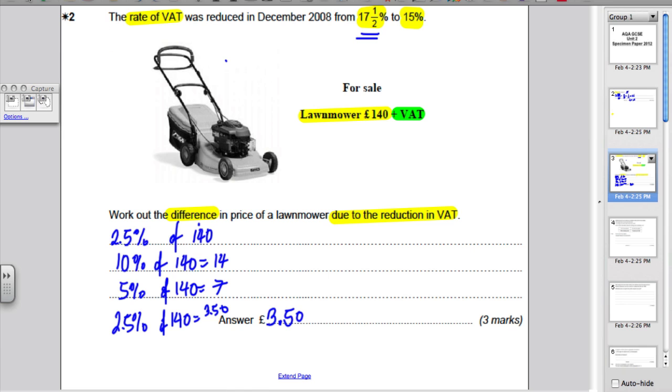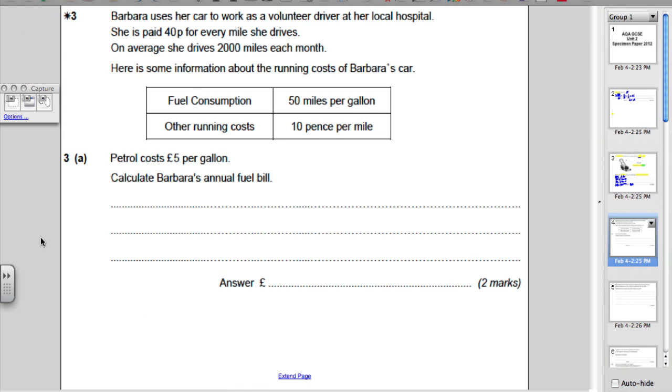Okay, let's have a look at question 3. Now, this question is quite straightforward, but you've got to have a fair bit of thinking here. There's a lot of information going on, so it's about reading the question carefully and picking out the salient or key points. Barbara uses her car for work as a volunteer driver for a local hospital. She is paid 40p per mile. So, payment is 40p per mile. On average, she drives 2,000 miles a month.